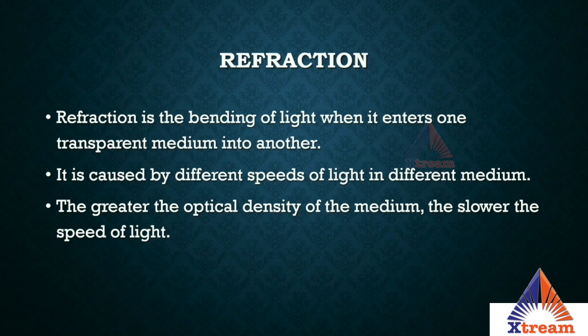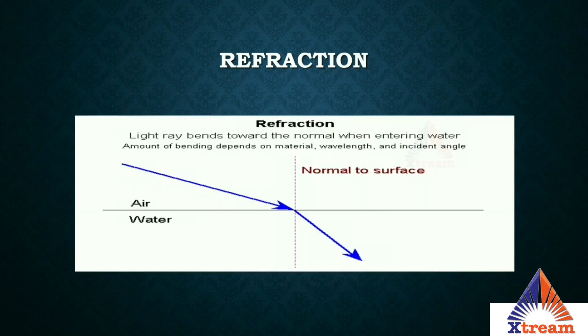Refraction is the bending of light when it enters from one transparent medium into another. For example, when you submerge a pencil in water, it looks bent — that is refraction. It is caused by the different speeds of light in different media. When light travels from air into water, its speed reduces, which is when refraction occurs. The greater the optical density of the medium, the slower the speed of light.